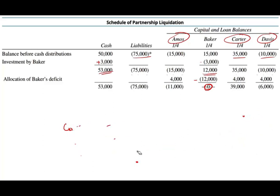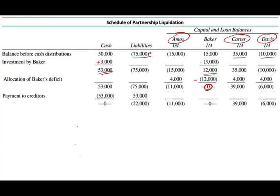Now we have $53,000 in cash and $75,000 in liabilities. We pay $53,000 to the creditors: debit liabilities $53,000, credit cash $53,000. Cash is now zero, and the remaining liabilities are $22,000.